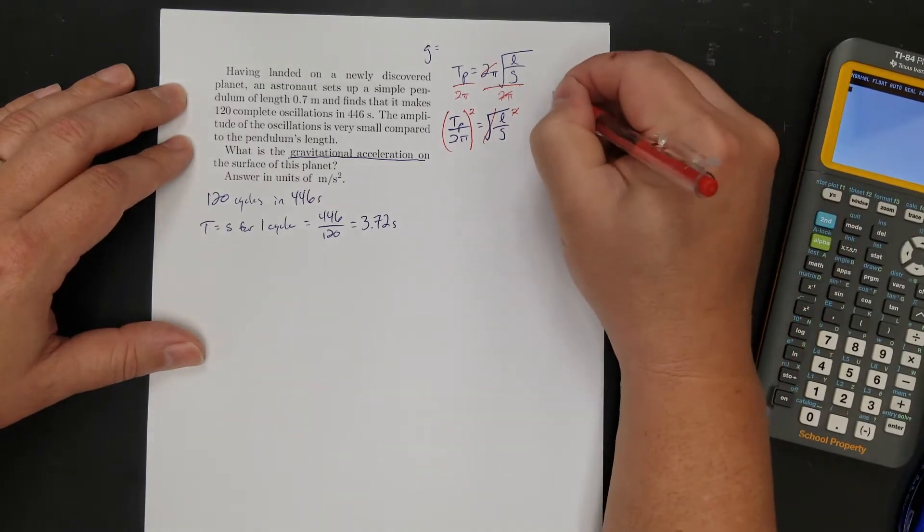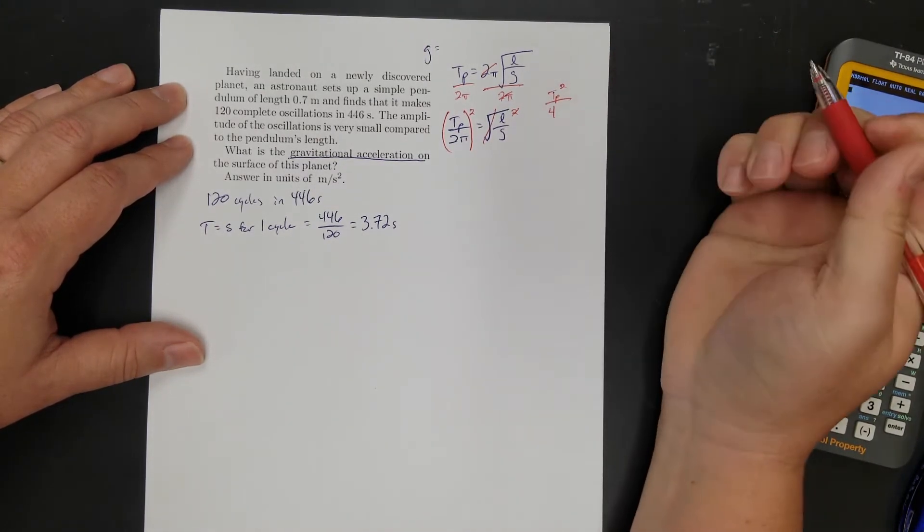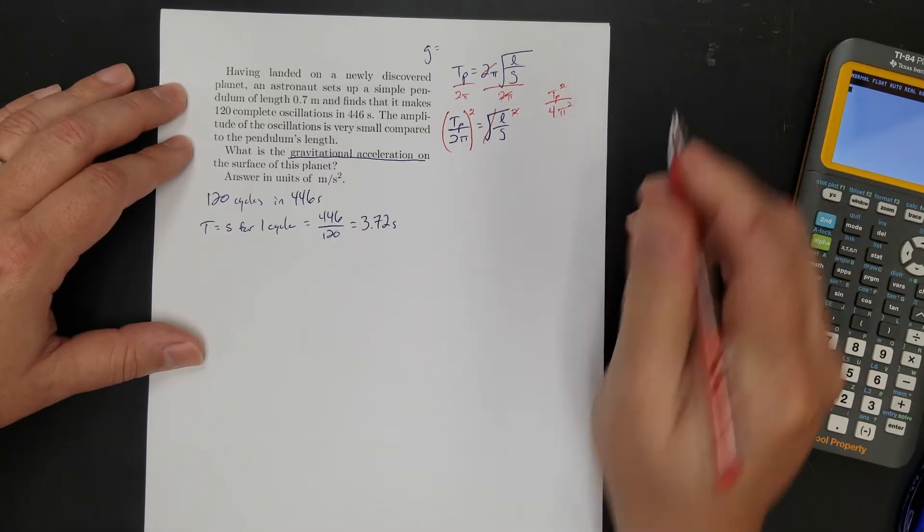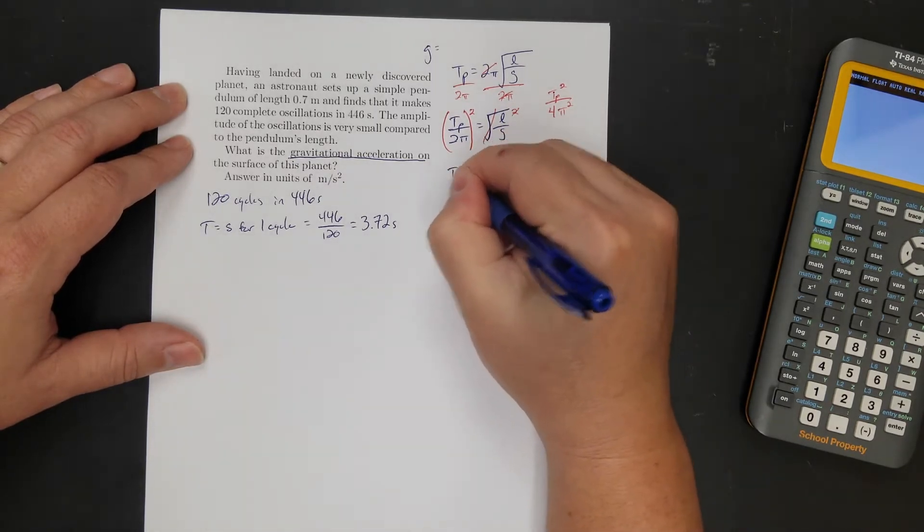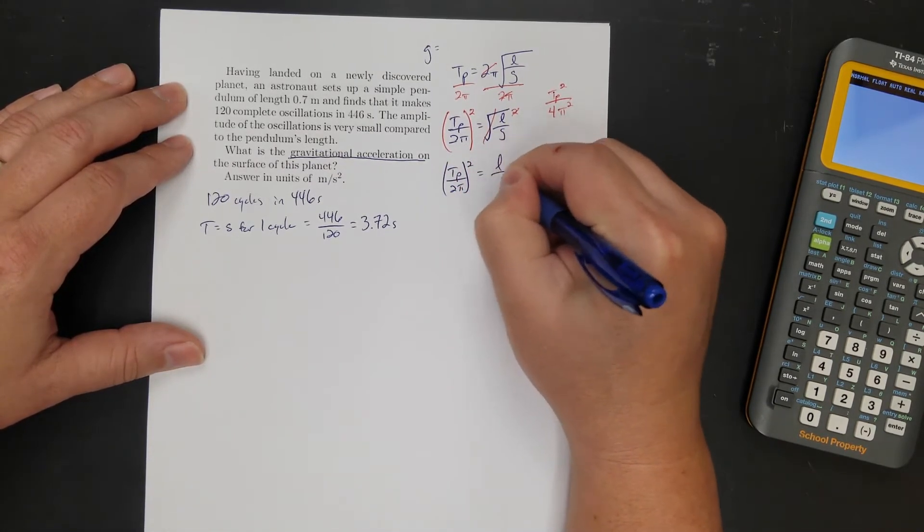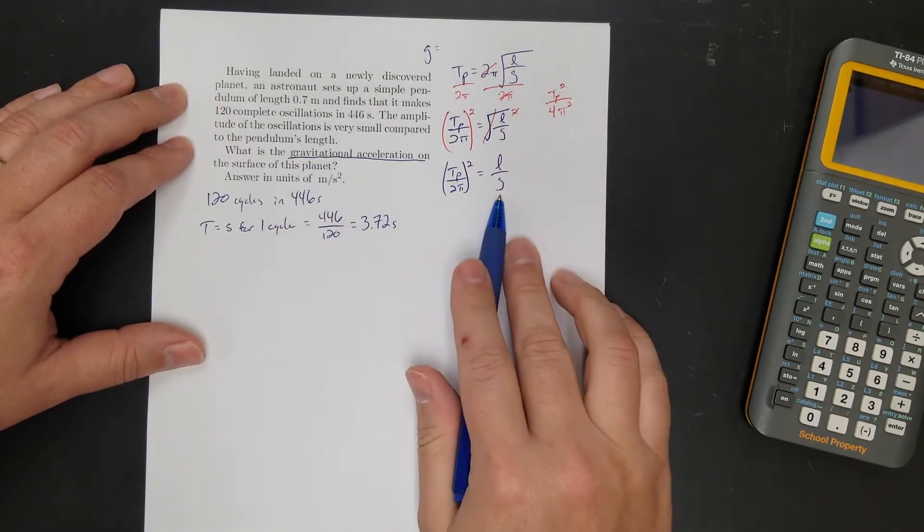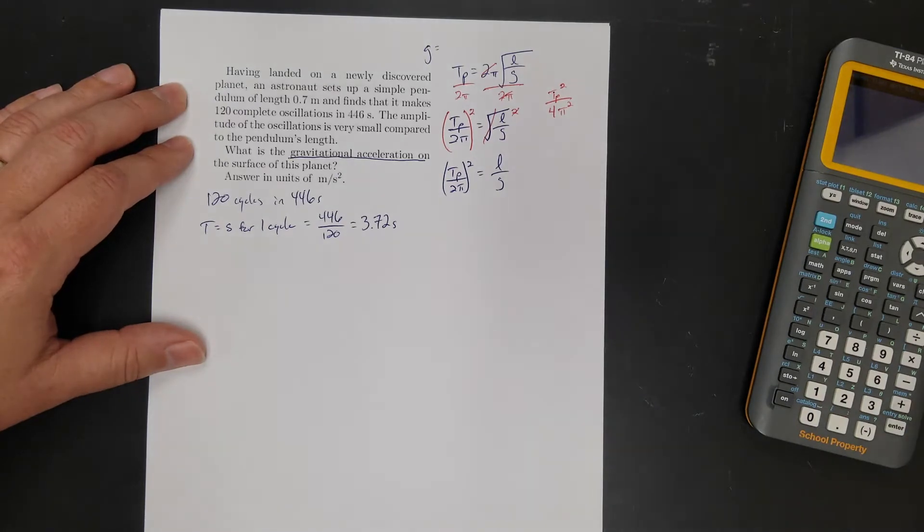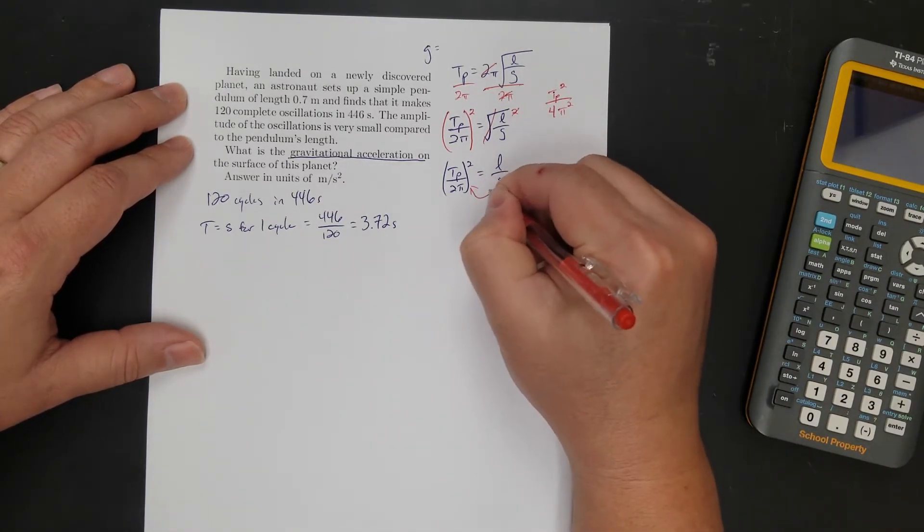You have to square the entire thing because whatever you do to one side, you do to the entire other side. So you could do it that way. Or, you know, if you want to be fancy, you could do period of a pendulum squared over 2 squared, which is 4 times π squared. Same thing. I just find it easier to do that. So now I have period of a pendulum over 2π quantity squared equals L over G.